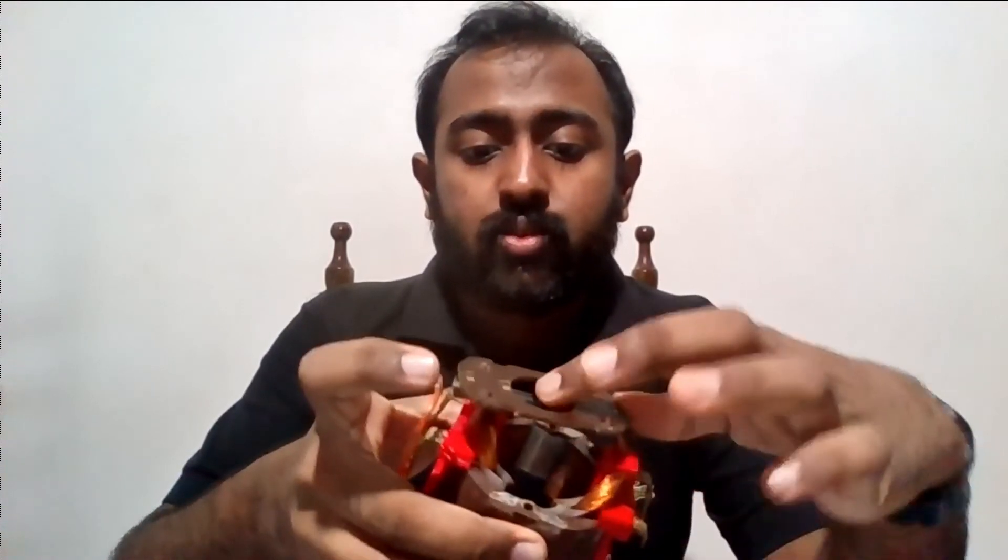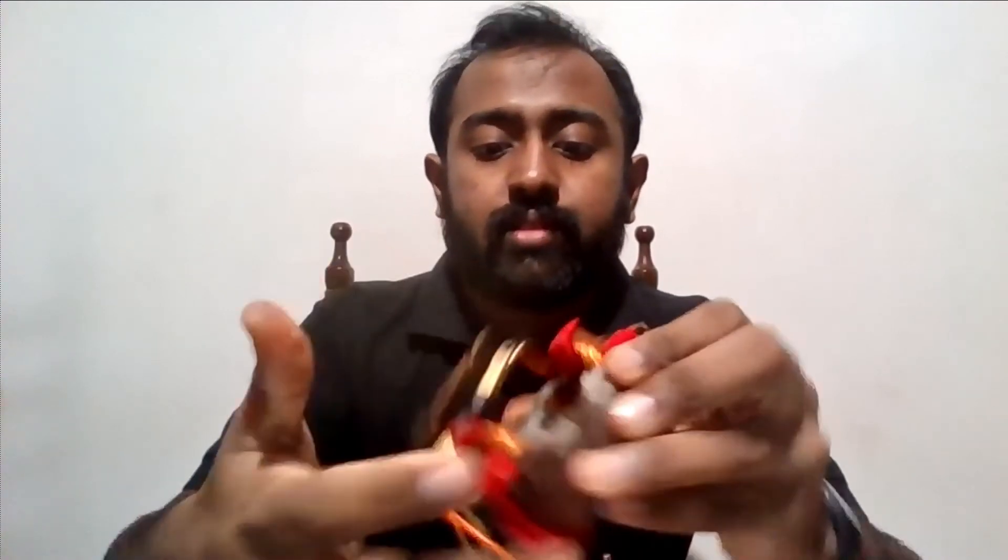The stator consists of basically the brushes. The brushes can move because there is a spring. And also the magnet which consists of the coils and some steel. And in the rotor we have the axle, the commutator and the armature.